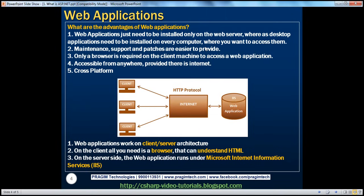On the client machine, you only require a browser that can understand HTML — you don't need to install any other software. Web applications are also accessible from anywhere, provided there is internet. For example, I can access google.com from my office, from my home, wherever, as long as there is internet. Another great advantage is cross-platform. If Microsoft Office is developed on a Windows platform, it can only run on a Windows operating system and fails on macOS or other systems. But with web applications, as long as the platform has a browser that can understand HTML, you are able to access it — so it's accessible cross-platform.